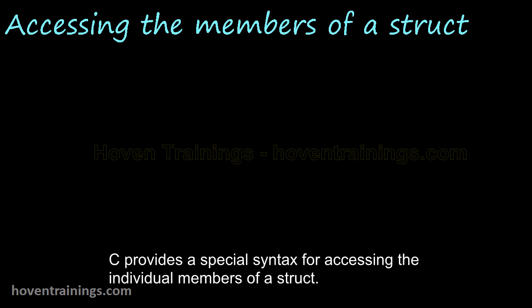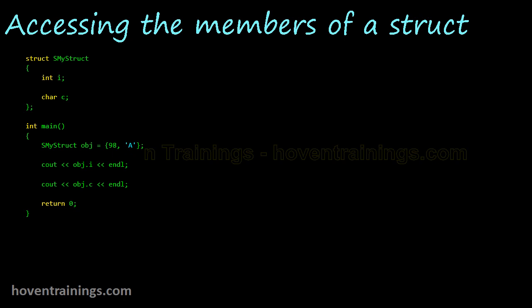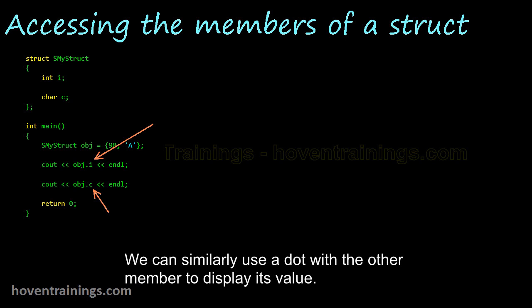C provides a special syntax for accessing the individual members of a struct. Square brackets are not used for this purpose. This code shows how to read the values of the members. This is how we can display the value of i. Use a dot with the struct identifier to reach the data member. We can similarly use a dot with the other member to display its value.